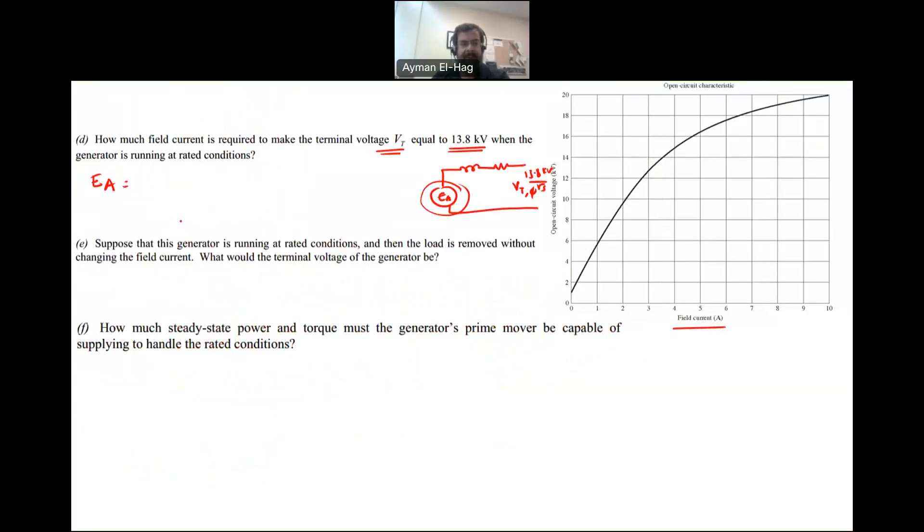Ea line-to-line equals root 3 times 11.544, which equals 20 kV. At 20 kV on the characteristic curve, what will be If? At this point, If equals 10 amps. We need to find Ea from KVL, done in the previous step, then use the curve to find If.